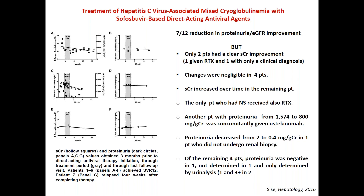Changes in creatinine were negligible for most patients and increased over time in the remaining. The only patient with nephrotic-range proteinuria also received rituximab. Another patient received concomitant ustekinumab, a biological drug used in psoriasis whose effects on renal inflammation are unpredictable. Proteinuria decreased from 2 to 0.4 g/creatinine in one patient who did not undergo renal biopsy. Of the remaining four patients, proteinuria was negative in one, not determined in one, and only determined by urinalysis in two.